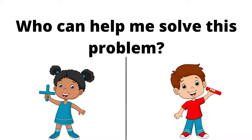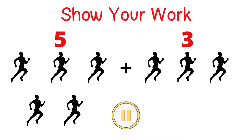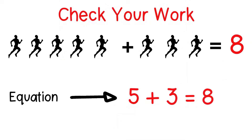Am I putting them together and adding like Put Together Patty, or am I taking one number away from the other to subtract like Takeaway Tim? In order to see how many laps he ran in all, I need to combine the two numbers. This means I need to add, and Put Together Patty helped me to realize that. Here's my picture to represent Jalil running five laps on Monday plus three more laps on Tuesday. When I add five plus three more, the total is eight. I can write an equation using numbers and symbols to model the problem: five plus three equals eight.